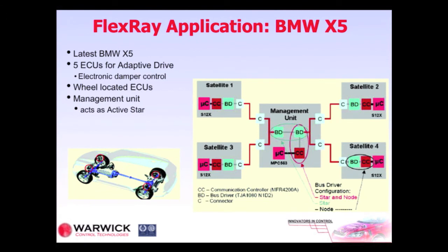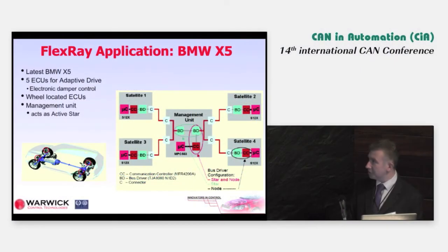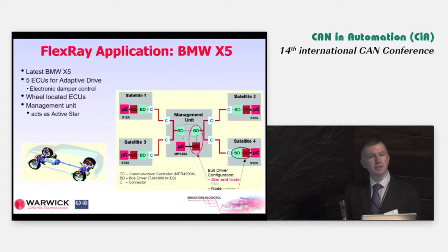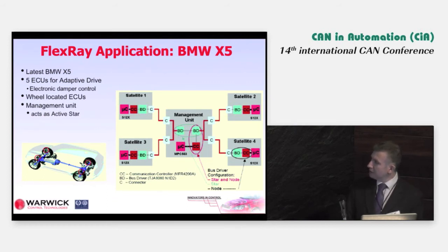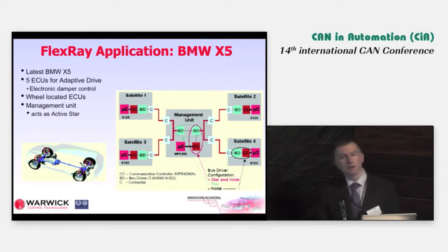The first production application of FlexRay was with the SUV from BMW — the X5. This is a representation of the architecture used. It was a chassis control system which they refer to as adaptive drive, and it consisted of five ECUs — one ECU at each quadrant of the vehicle: front left, front right, rear left, rear right, and a management unit. A single channel was used rather than the two channels.